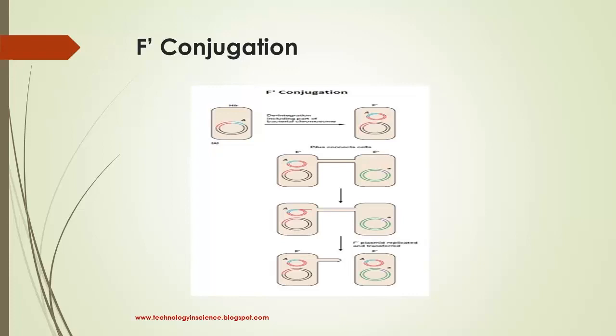The F prime cell retains all its genes, although some of them are on the plasmid, and still mates only with an F minus recipient.